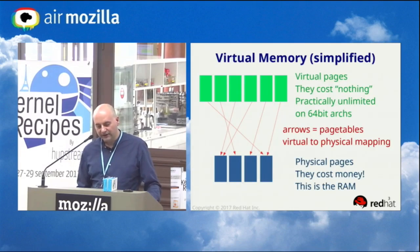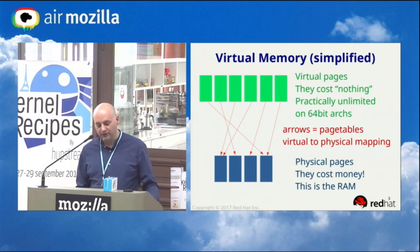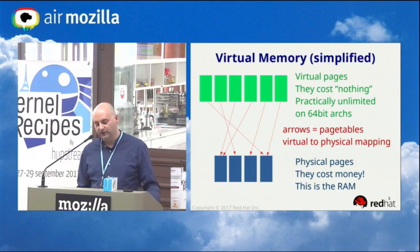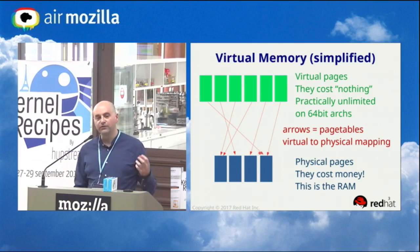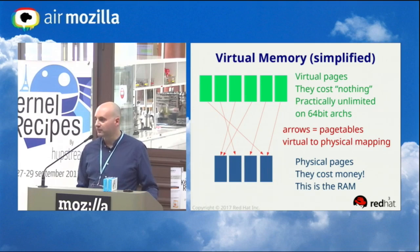The basics of the virtual memory system in Linux are built on what the hardware provides: page tables. Page tables are implemented in hardware and allow us to create virtual memory. Virtual pages cost absolutely nothing — they can point to physical pages. If you establish the page table so a virtual page points to a physical page, and two virtual pages point to the same physical page, then you have shared memory.